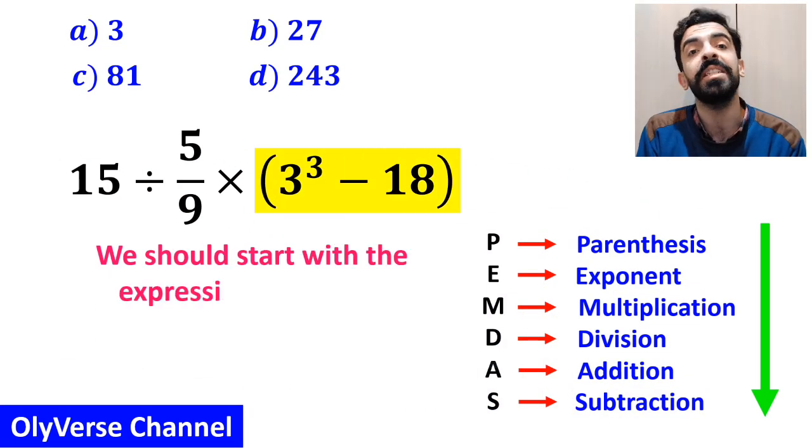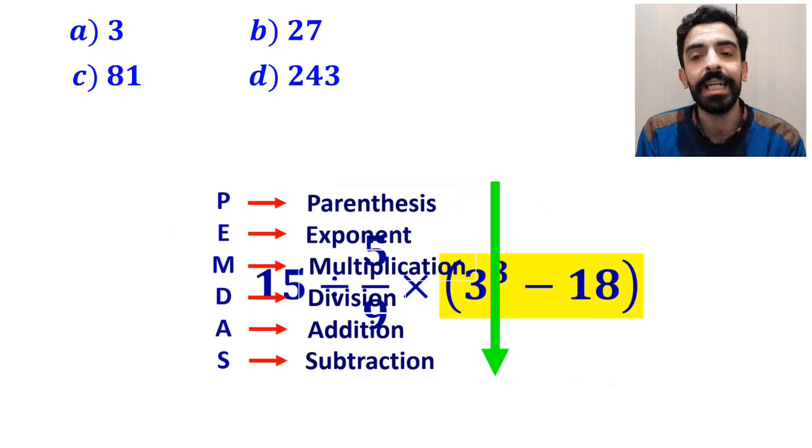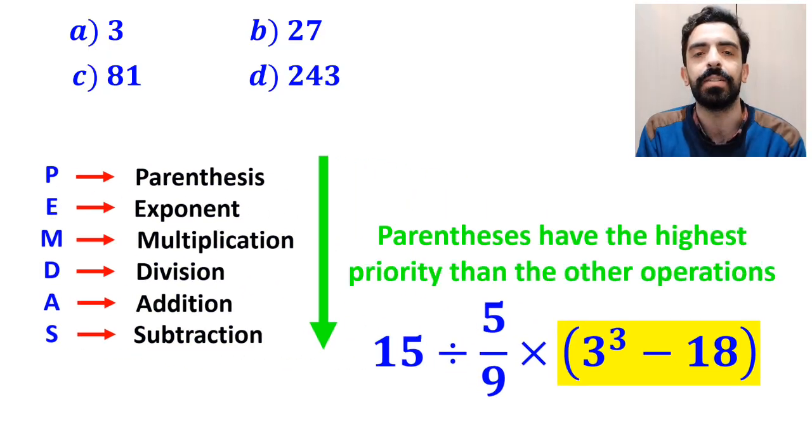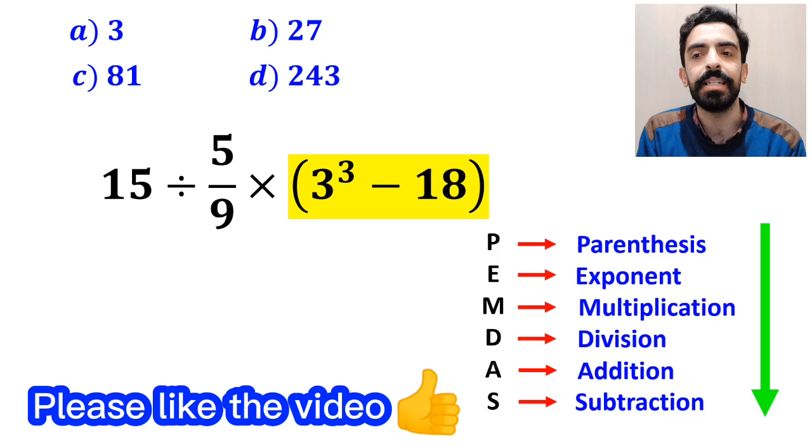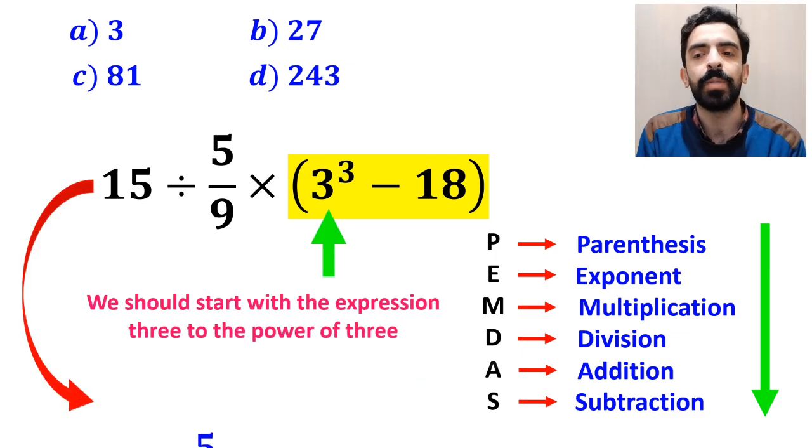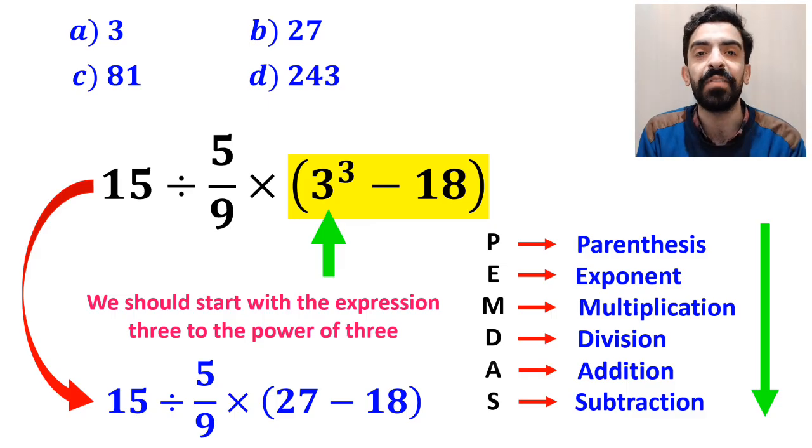So we should solve the expression inside the parenthesis first, because parenthesis have the highest priority than the other operations. And inside the parenthesis, we should solve the expression 3 to the power of 3. So instead of this expression, we can write 15 divided by 5 over 9 times 27 minus 18 inside the parenthesis.